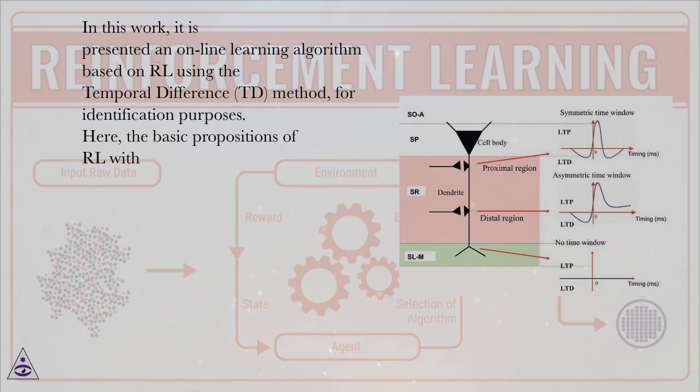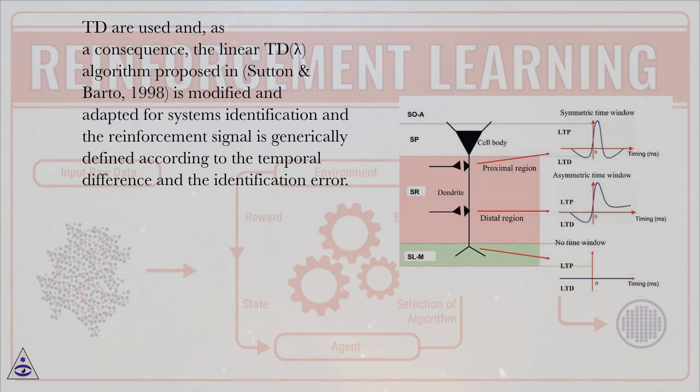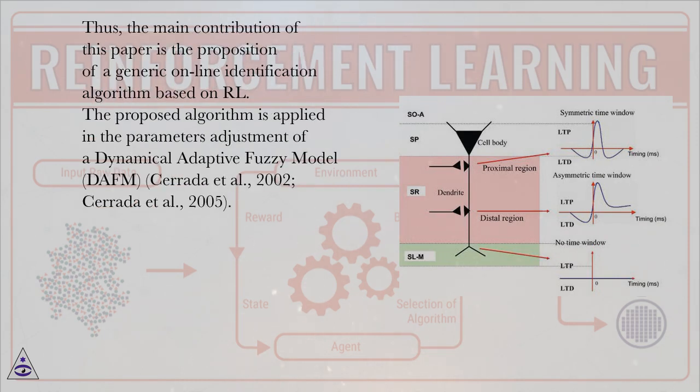Here, the basic propositions of RL with TD are used and, as a consequence, the linear TD-lambda algorithm proposed in Sutton and Barto, 1998, is modified and adapted for systems identification. The reinforcement signal is generically defined according to the temporal difference and the identification error. Thus, the main contribution of this paper is the proposition of a generic online identification algorithm based on RL.